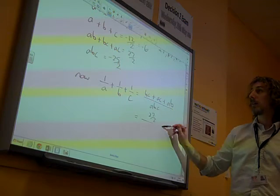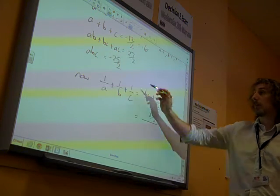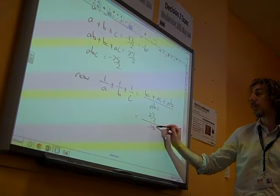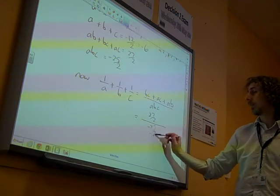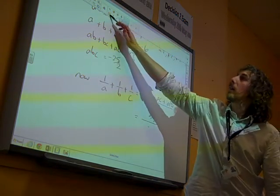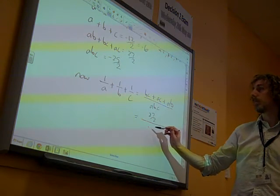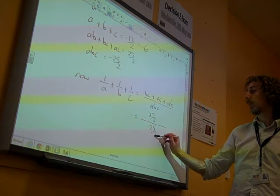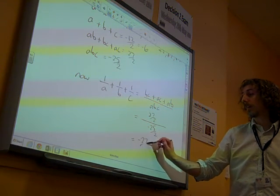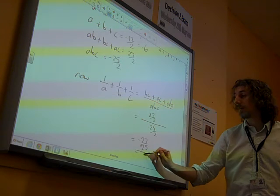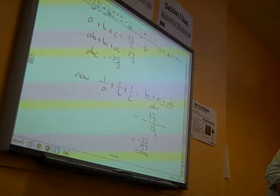So can you see that ends up being 27 over 2 on the top line, because that's just that bit there, divided by minus 25 over 2 on the bottom line. Which means the answer is minus 27 over 25, at the end of all of that.